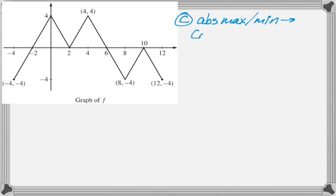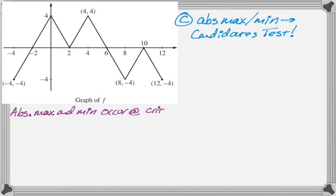So absolute max min, I always use the candidates test. So to use the candidates test, I need to tell them why I'm looking at certain points. So the absolute max and absolute min will have to occur at either an end point of the interval, which would be negative 4 and 12, or at a critical point.